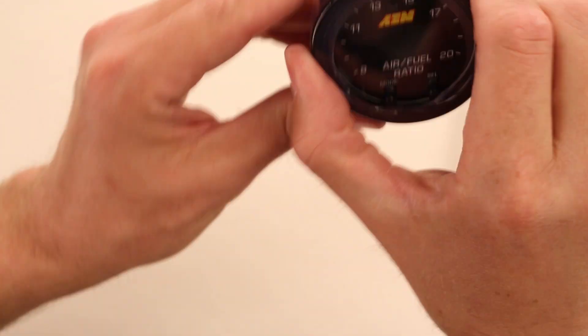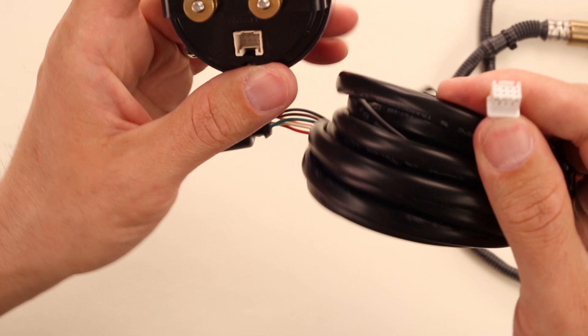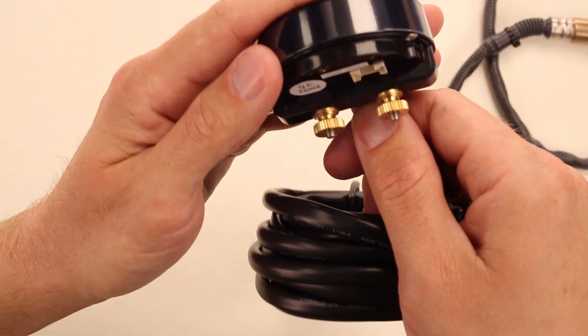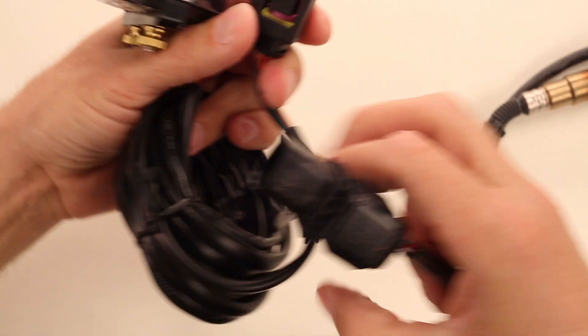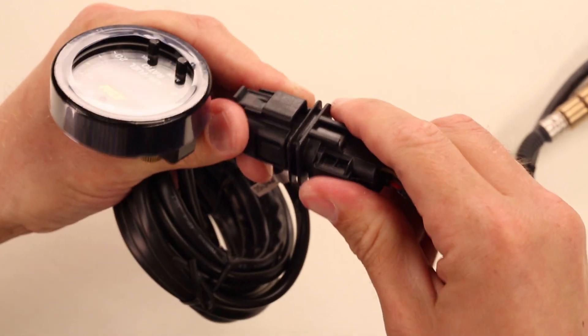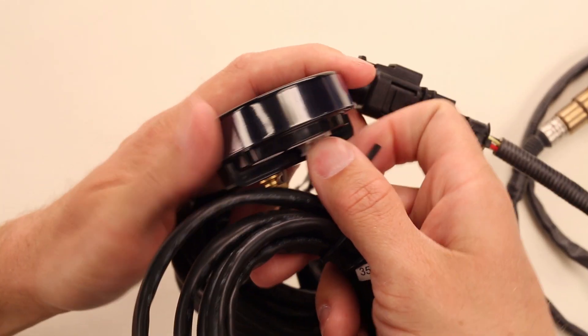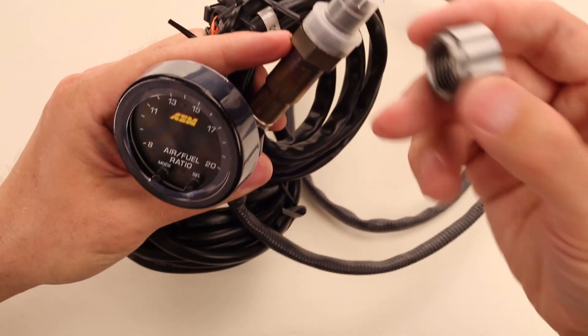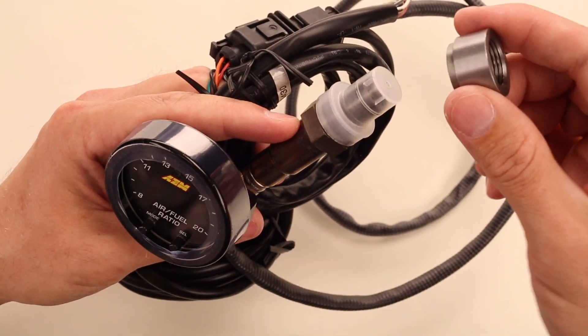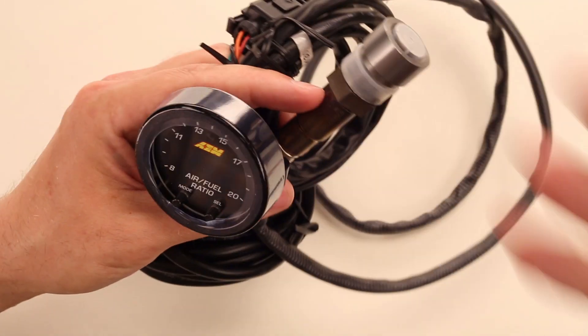So, install is as simple as mount the gauge, connect the sensor, plug the sensor into the harness, and then feed and power the gauge. Drill weld the exhaust bung as needed into your vehicle. And you're done.